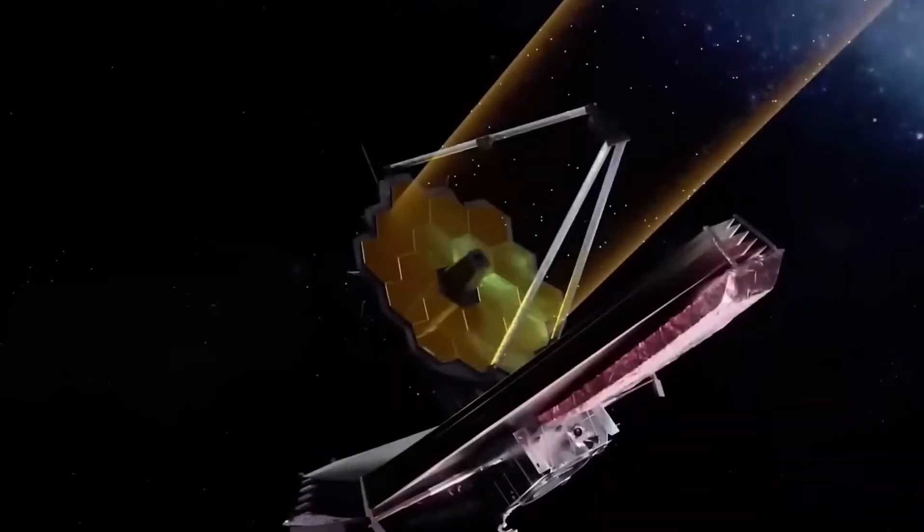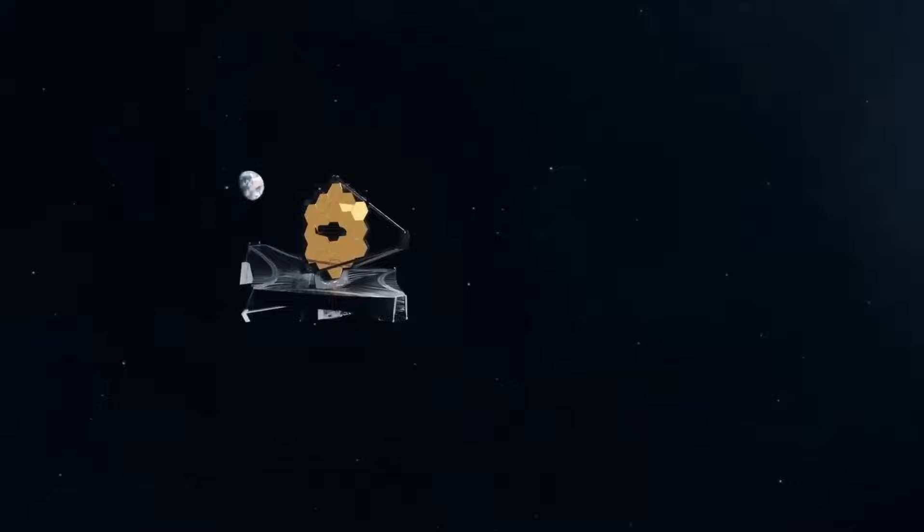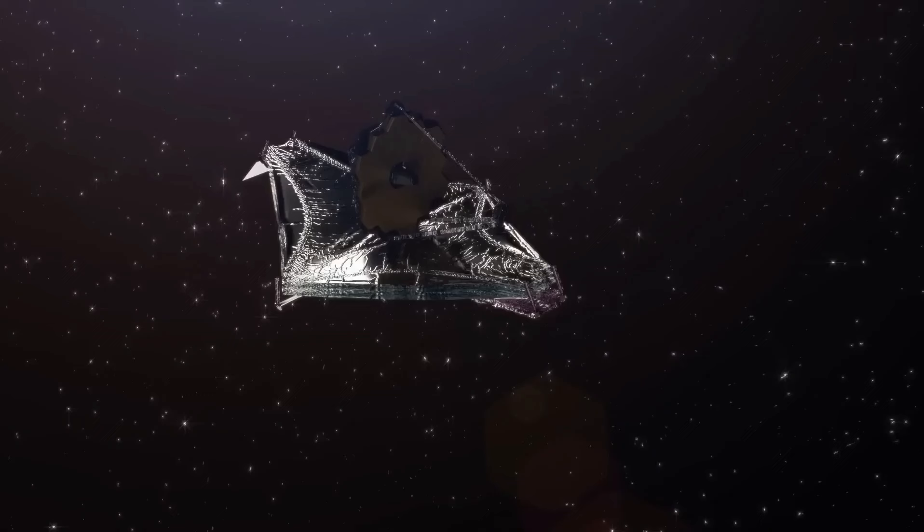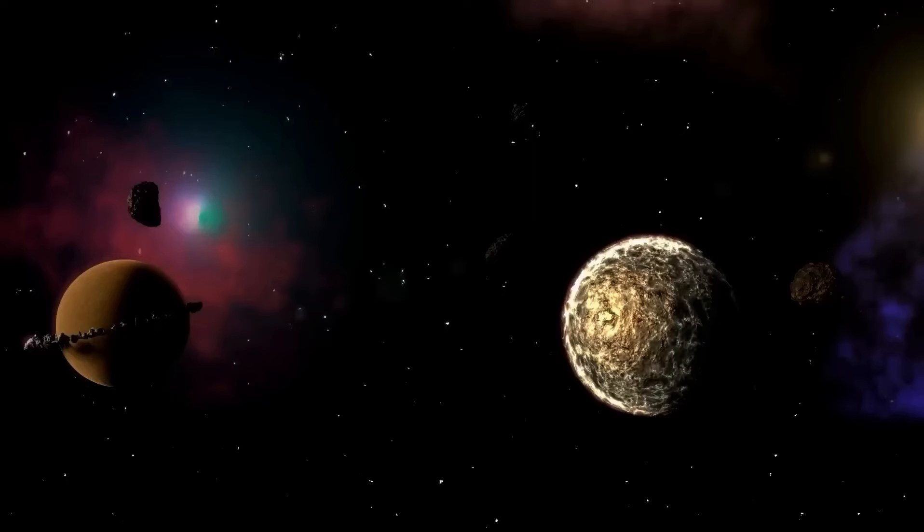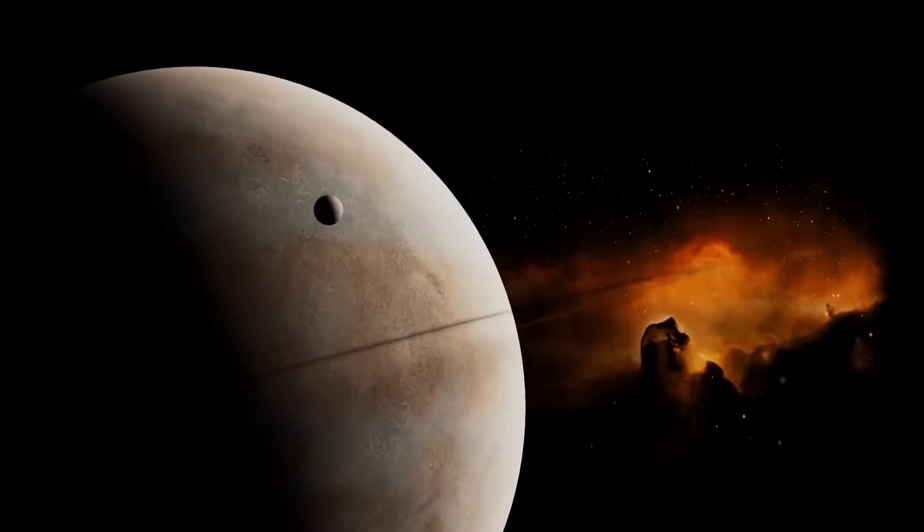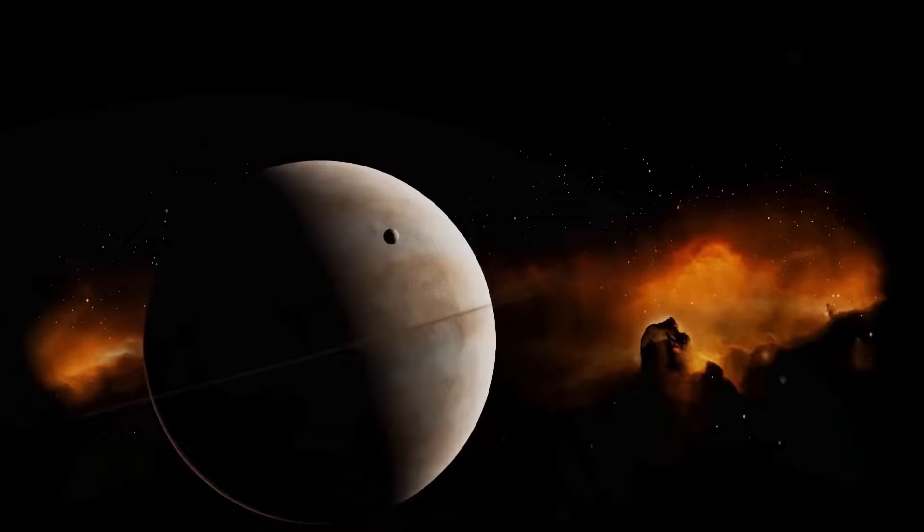Overall, the James Webb Space Telescope represents a significant advancement in our ability to explore the universe and gather detailed information about its most distant and ancient events. This was a crucial moment because any misalignment or damage to the sunshield could have affected the telescope's ability to observe distant objects. Fortunately, it passed this test successfully and moved on to the next step.